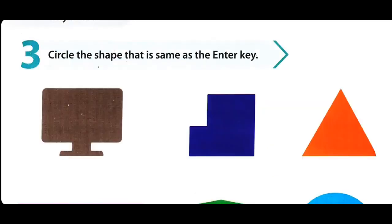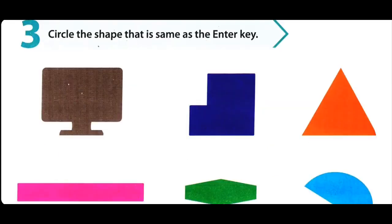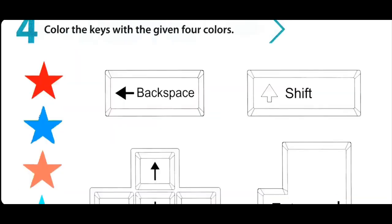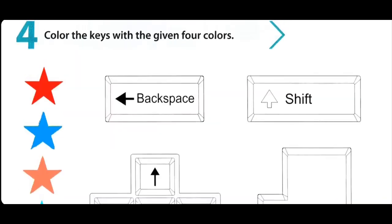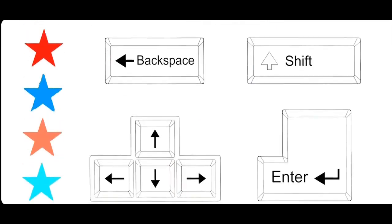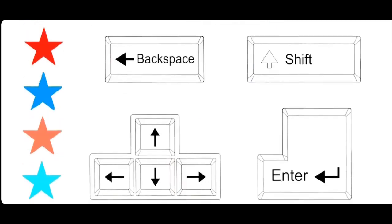Exercise 3: Circle the shape that is same as the Enter key. Jo shape Enter key ki tarah hai, us par aapne daira lagaana hai. Exercise 4: Color the keys with the given four colors. Diye gaye chaar rangon ke saath aapko keys mein color karna hai.